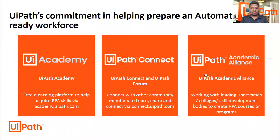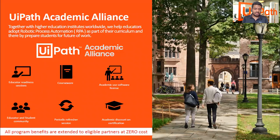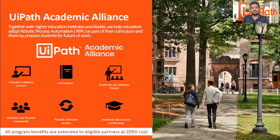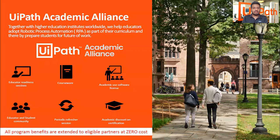UiPath Academic Alliance has partnered up with multiple institutes in the world. In our region, UiPath Academic Alliance has partnered with 350 universities. What Academic Alliance does is empower the lecturers so that they can go to their classrooms and share knowledge with their students. To do that, Academic Alliance has provided training material, courseware, and free academic licenses and other facilities to help lecturers get themselves knowledgeable on RPA and UiPath, and also ensure students can learn alongside their lecturers.